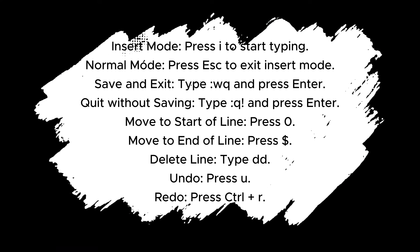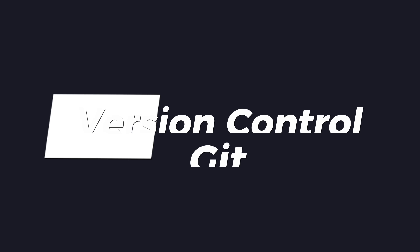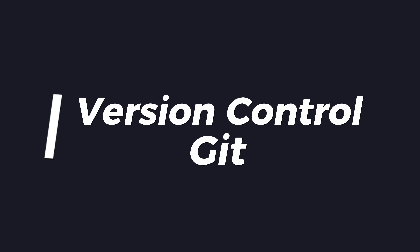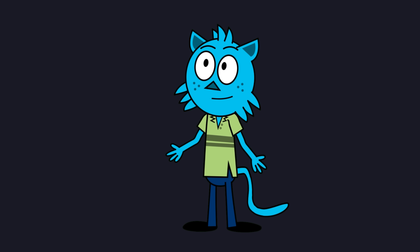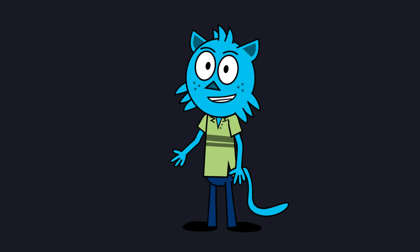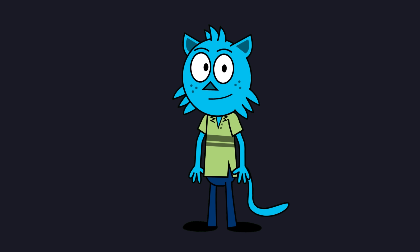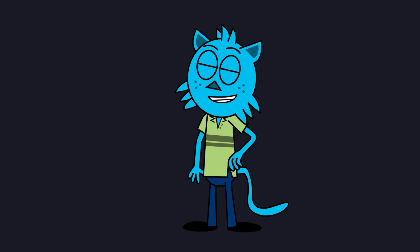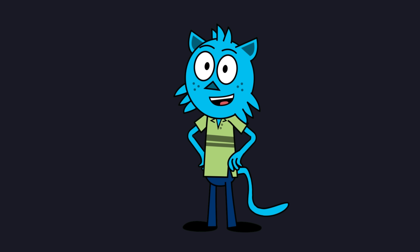To get the most out of Vim, here are some essential shortcuts to help you navigate and edit files efficiently. Up next, we'll dive into version control with Git. Version control is an essential skill for developers, enabling them to manage changes, collaborate on projects, and keep track of their work. Git is the most popular version control system, and we'll be exploring it today.